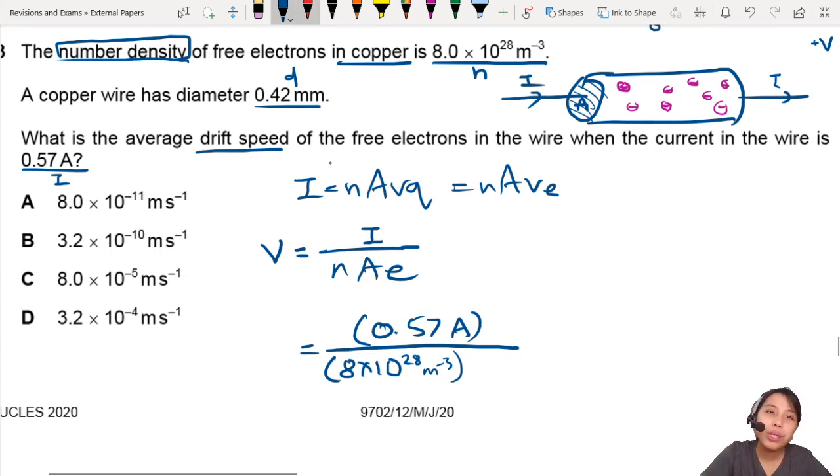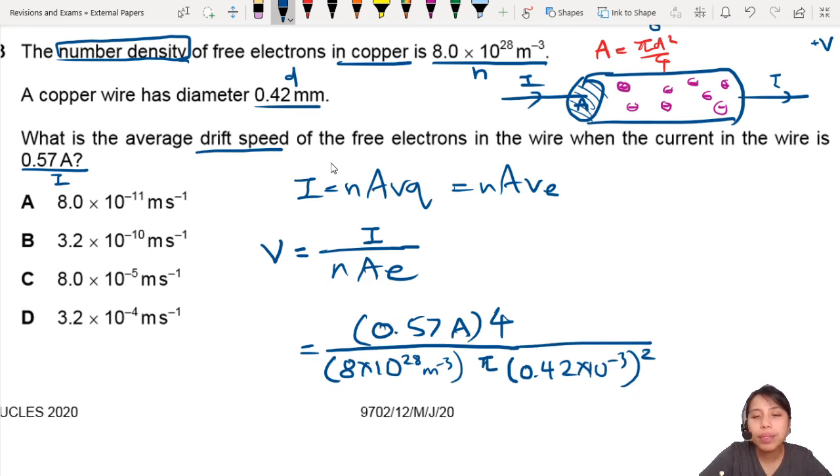Area of a cylinder. You need to know that the area here is pi r squared or pi d squared over 4. Both also can, up to you. So pi, let's put the 4 up here. Pi d squared. So d is 0.42 times 10 to the negative 3 squared. There we go.